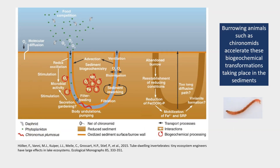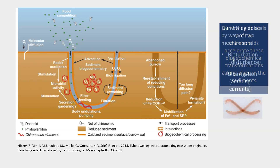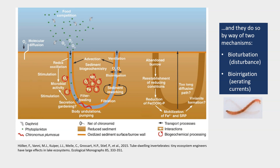Burrowing animals such as chironomids accelerate these biogeochemical transformations in the sediments by way of two mechanisms: bioturbation — that is, physical disturbance — and bioirrigation, which refers to aerating currents created by the animals.